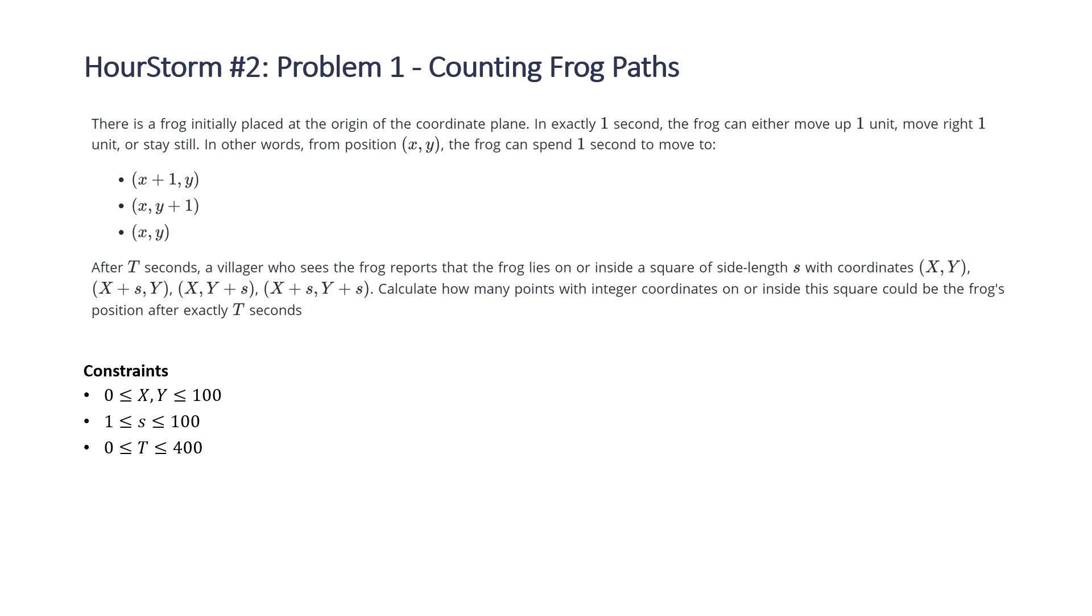In other words from position (x,y) the frog can spend one second to move to the following three positions. After T seconds a villager reports that the frog lies on or inside a square of side length s with coordinates (X,Y). Calculate how many points with integer coordinates on or inside this square could be the frog's position after exactly T seconds.